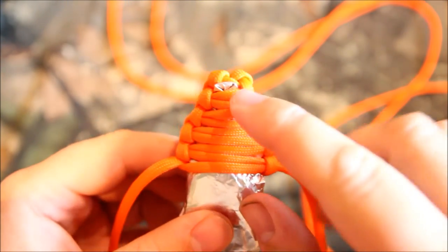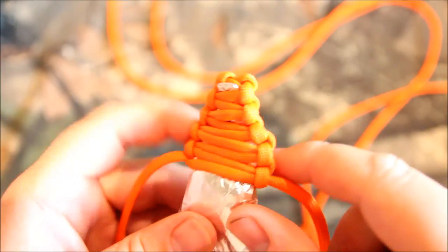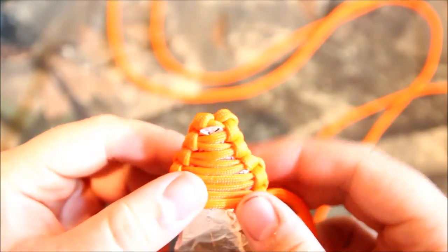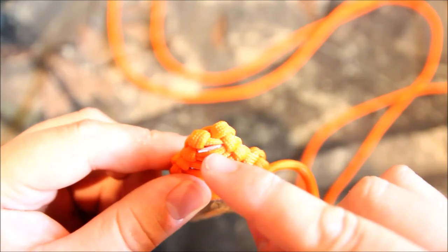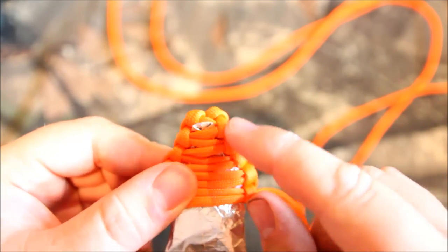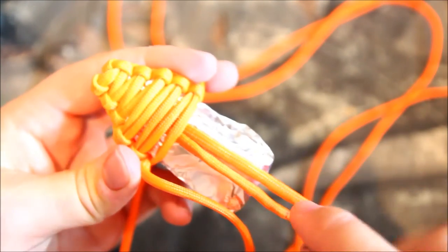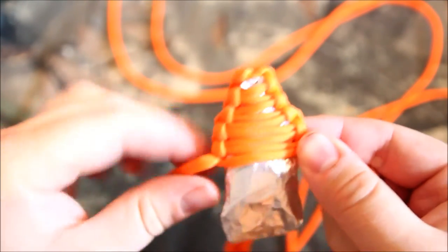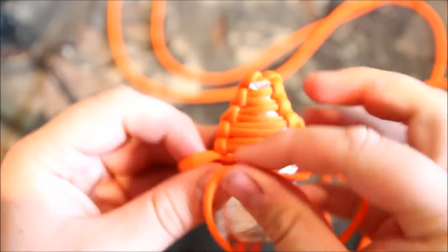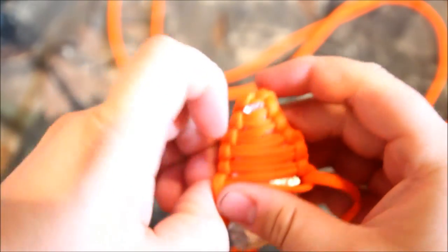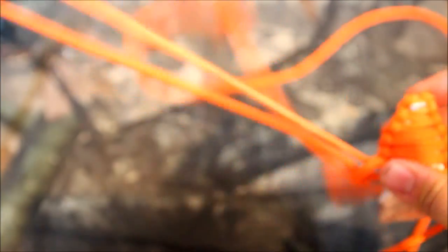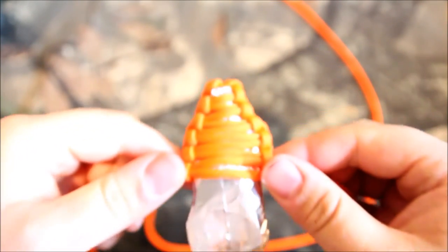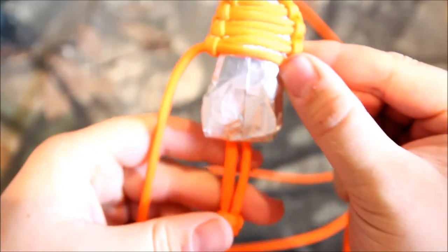All right, so this is that little lip that you made at the very end. All I did was I just captured it inside of the Cobra. And if you look on the back side there's the main cords running down through the middle. And just like a regular Cobra, you just work the braid over top of the grenade.